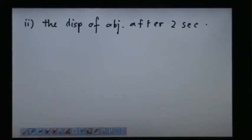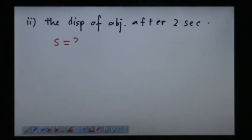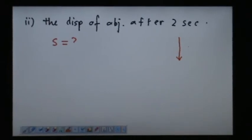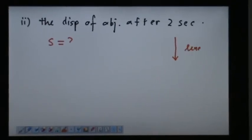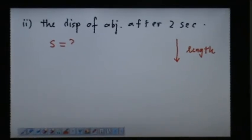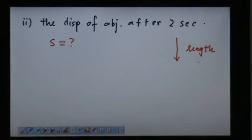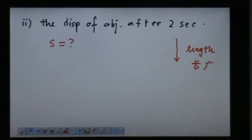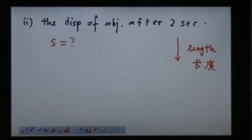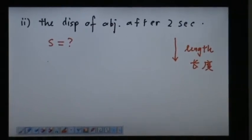Next we have the displacement of the object after 2 seconds. We are interested to find out s, how far it has traveled - the length. The length of the object falling. Let's say a durian falls for a length of 1.7 meters. We are interested in what we call panjang, or length.